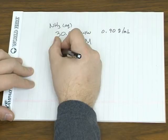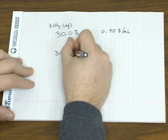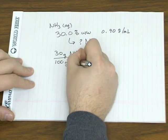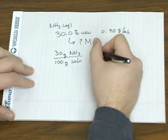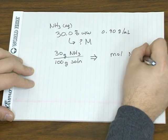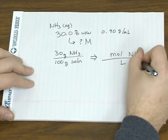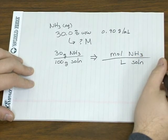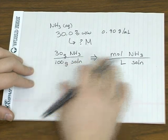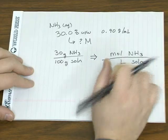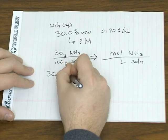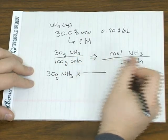So if you look, 30% by mass means that you got 30 grams of ammonia per 100 grams of solution. Molarity means that you have so many moles of ammonia per liters of solution. Looking at the concentration unit we're given and the concentration unit we want, looks like we'll have to convert grams of ammonia to moles.